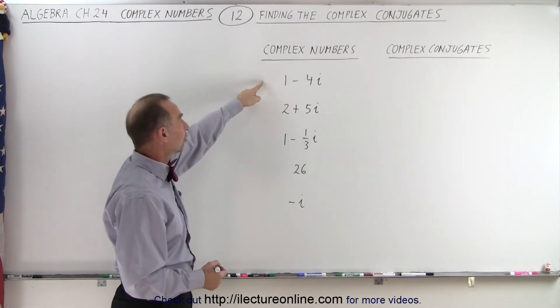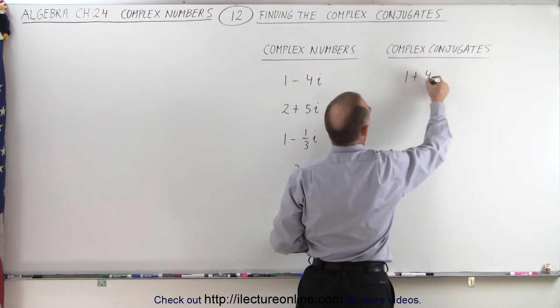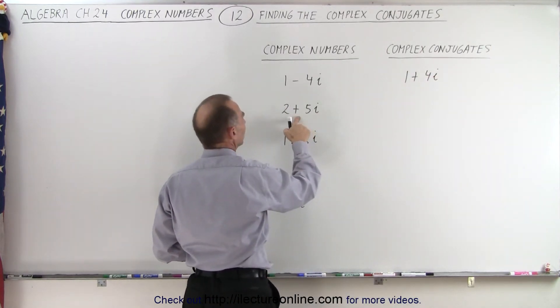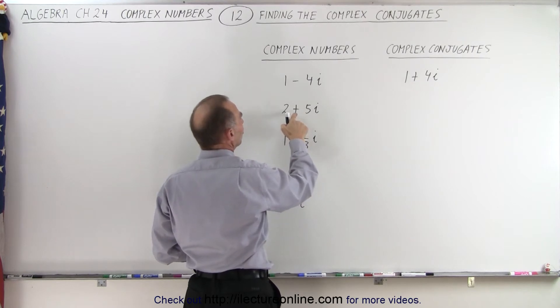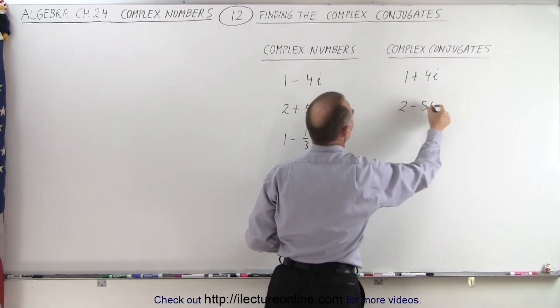So the complex conjugate of the first one is simply 1 plus 4i. And for the second complex number, we just change the plus to a negative, so it becomes 2 minus 5i.